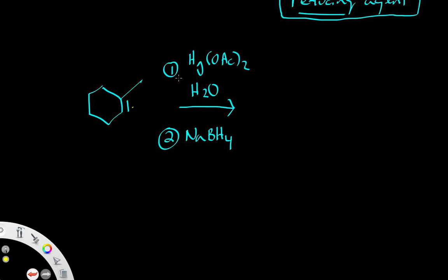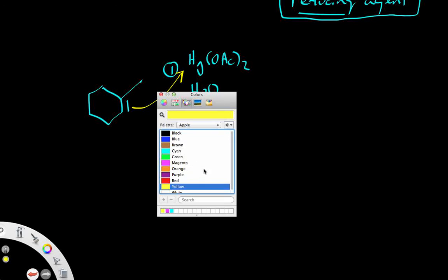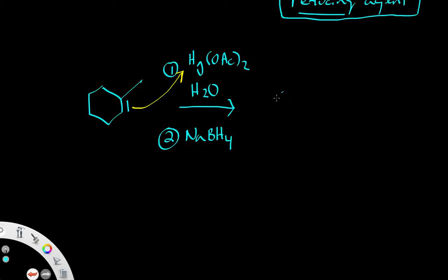This pi bond is going to serve as our nucleophile, and the mercury is going to serve as our electrophile. The next step shows a bridged species with mercury acetate and a positive charge — also known as a mercurinium ion. Working with a bridge means no carbocation formation, no rearrangement, and therefore no messy mixture of rearrangement products.